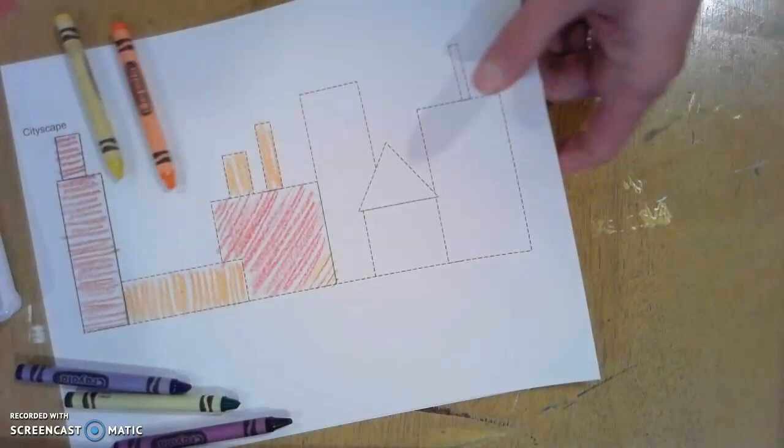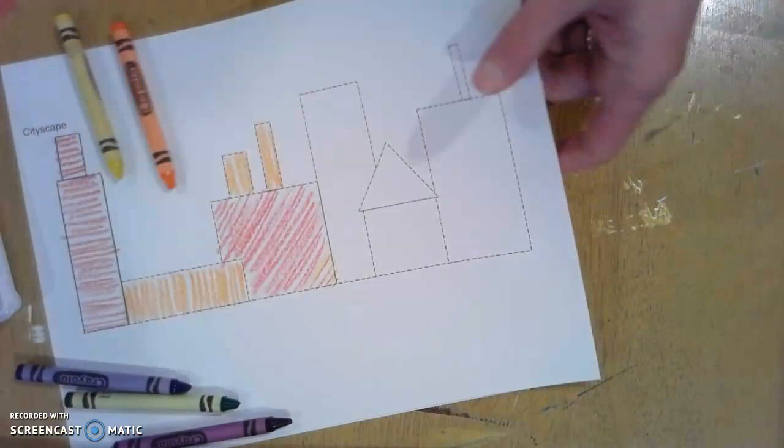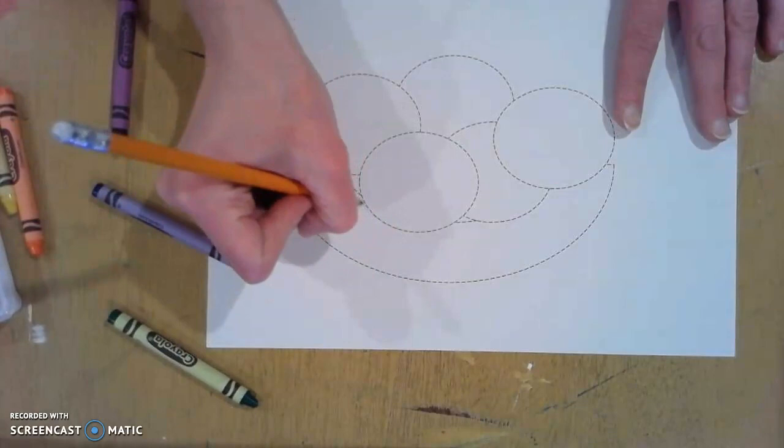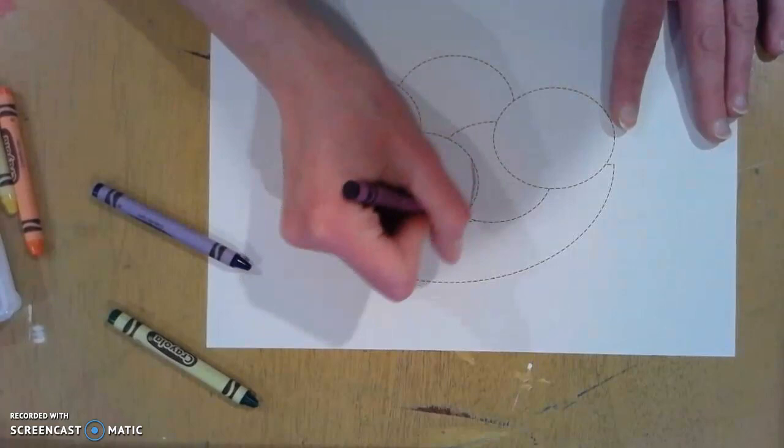We're going to do something similar with the still life page. You're going to choose warm or cool colors. You can encourage your child to trace each of the shapes.